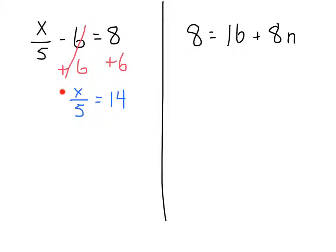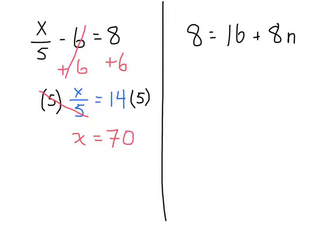Now we have our one-step equation: x divided by 5 is equal to 14. Since we're dividing by 5, we do the opposite of division, which is multiplication. We multiply by 5 on both sides. On the left, the 5s cancel out, leaving x. On the right, 14 times 5 is 70. So our answer is x is equal to 70.